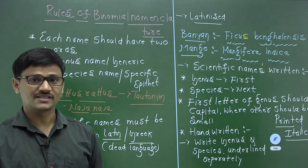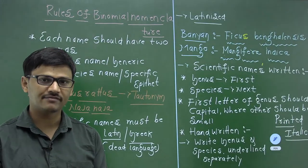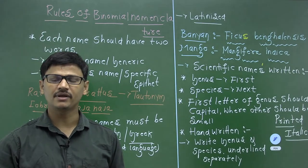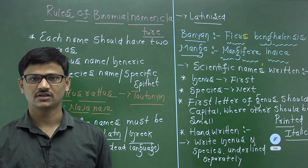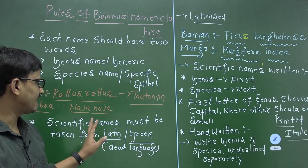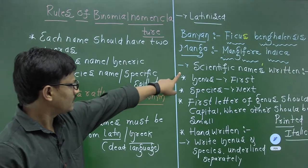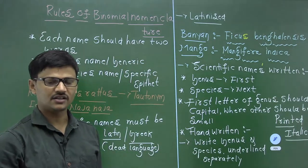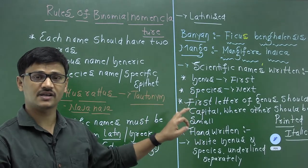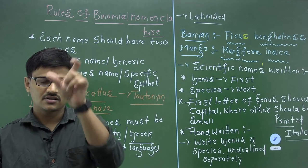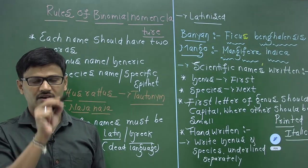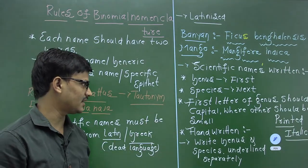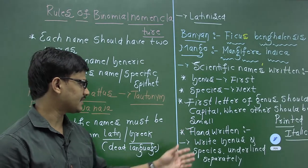The italic font used for scientific names indicates that the names are taken from Latin language — this is called italicization. Italicization means printing scientific names in italic format to show the words have been taken from Latin. There is no need to follow underlining or italic rules when writing a scientific name at the start of a paragraph.